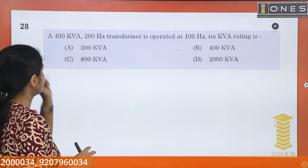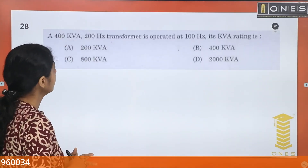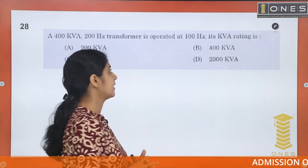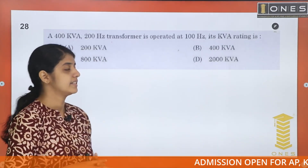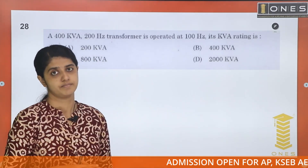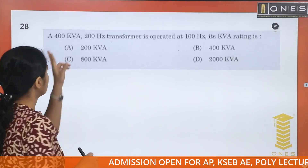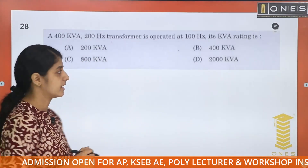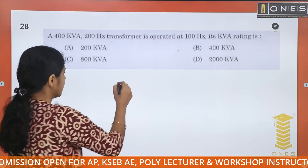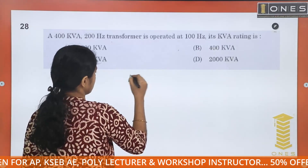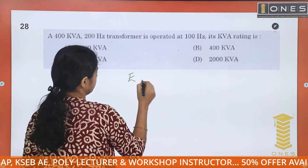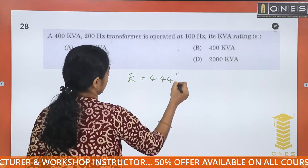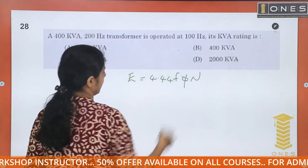Question number 28: A 400 kVA, 200 Hz transformer is operated at 100 Hz. Its kVA rating is? We relate kVA and frequency using the transformer EMF equation: E equals 4.44 × F × flux × N.